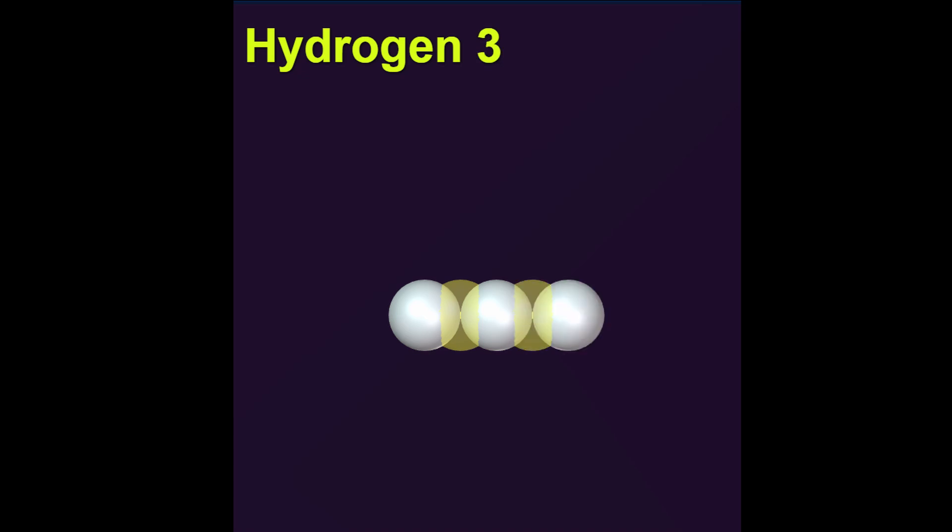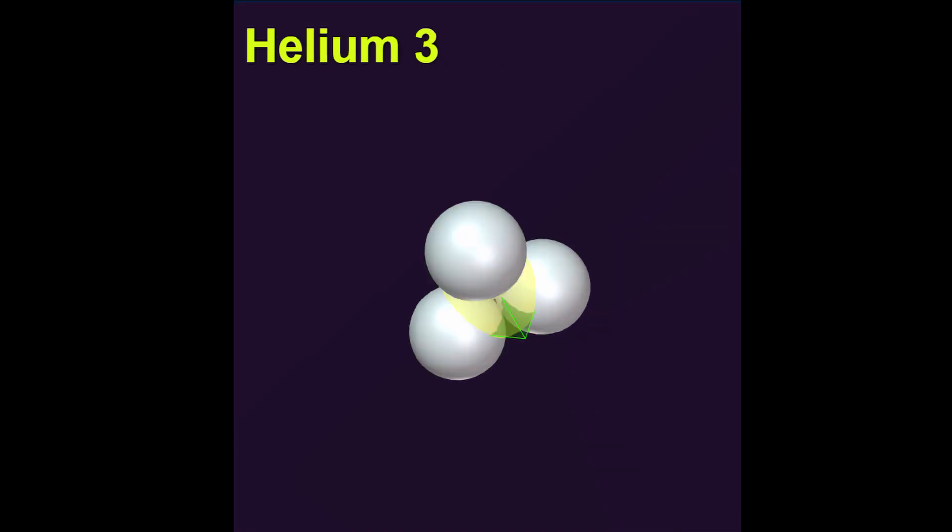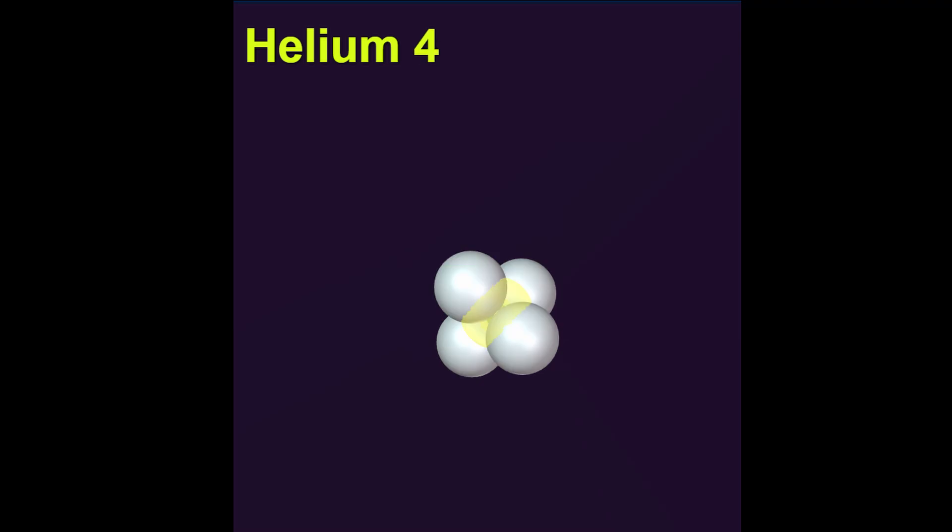Next up we have hydrogen 3 or tritium as the straight line and helium 3 as the triangular shape. Helium 4 consists of two deuterons aligned in a tetrahedron shape.